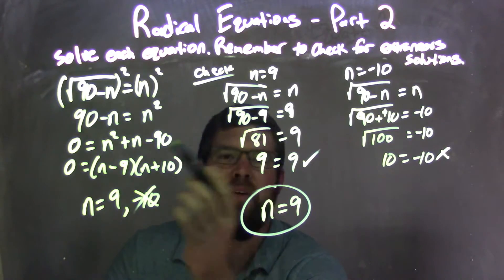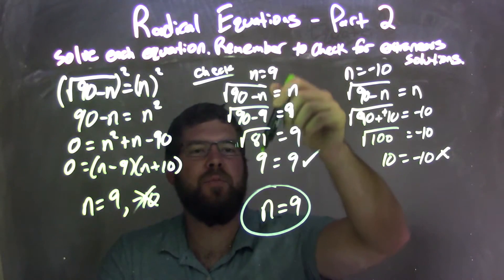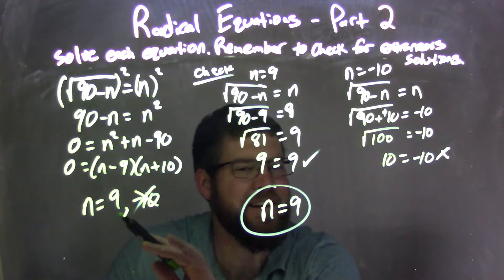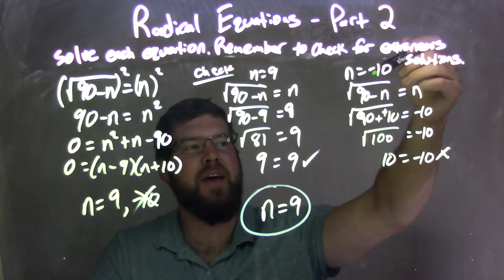I checked both of them to see if we had any extraneous solutions. When I plugged 9 in and simplified, we got left and right-hand side equal to be 9 and 9. Fantastic. 9 is a real solution.